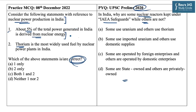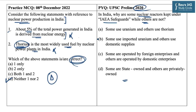Statement 1 is incorrect as nuclear power is the fifth largest source of electricity in India and its share in total electricity generation is about 3%, not 5%. Statement 2 is also incorrect — it is uranium, not thorium, which is widely used as a fuel by nuclear power plants in India. So the answer to this question is D — neither 1 nor 2. The answer to the previous year question is B.